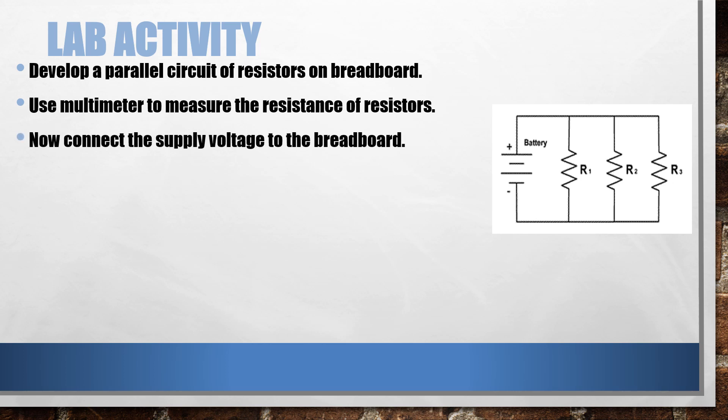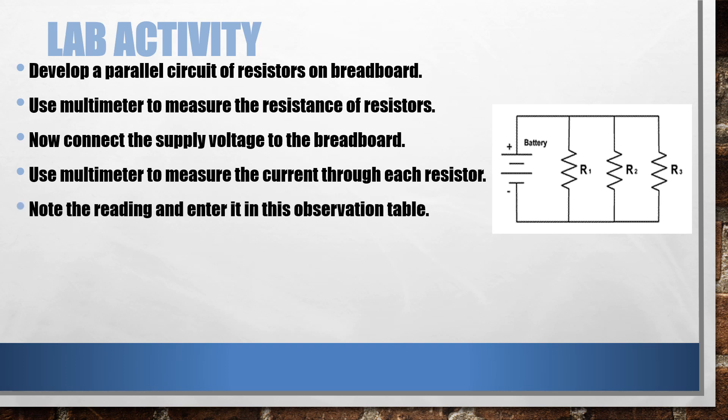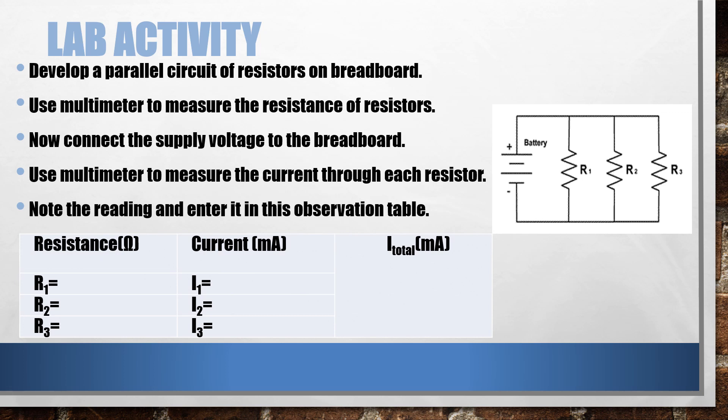Then use a multimeter to measure the current through each resistor. Note down the reading and enter it in this observation table.